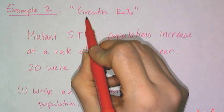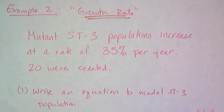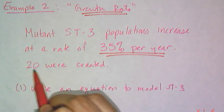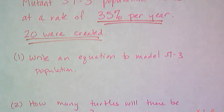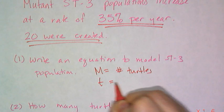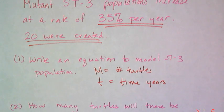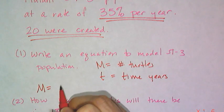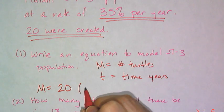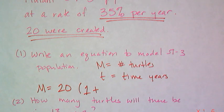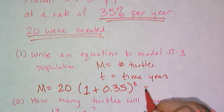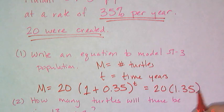Let's look at an example now of a problem where you're given the rate. So the mutant ST-3 population, the third version of the snapping turtle, increases at a rate of 35% per year, and 20 were created. And now I want to write an equation to model this population. So if I say m is equal to the number of turtles, and t is equal to the time in years, then my model is going to be m equals 20, because that's the initial value of the turtle population, and then a 1 plus my rate written as a decimal, which is 0.35, and then raised to the t years. And you can simplify this to be 20 times 1.35 raised to the t.